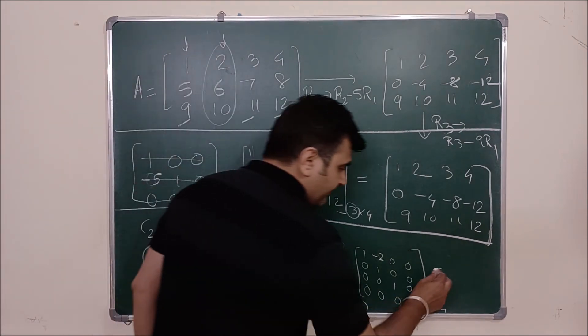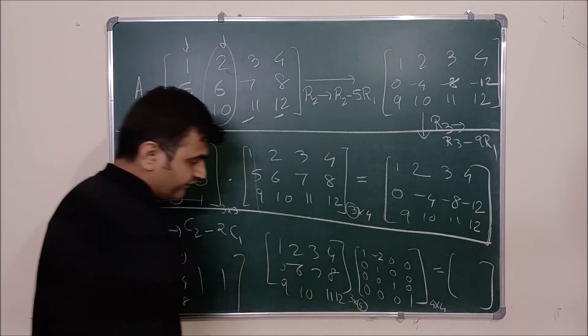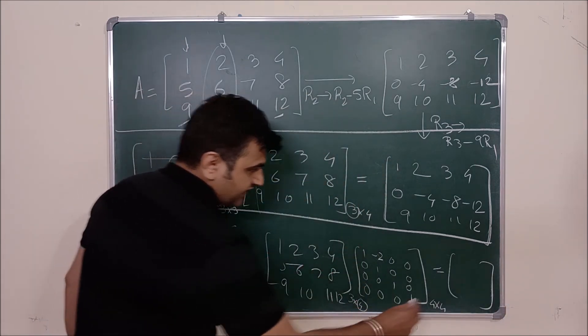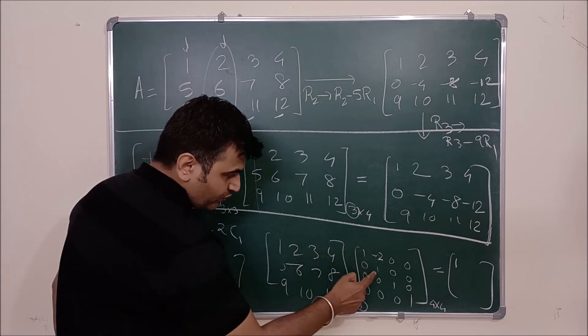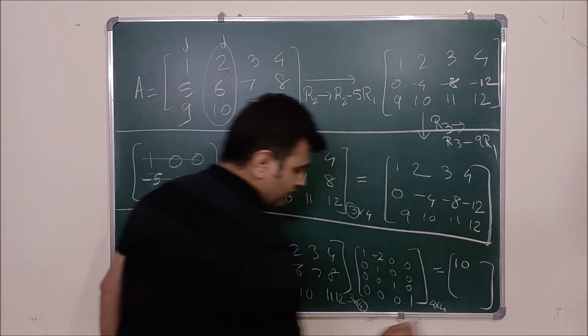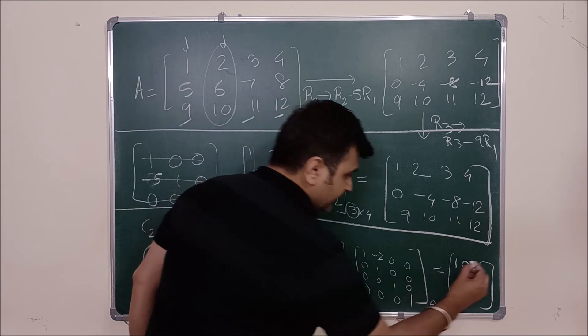This is 1. Now 1 into minus 2 plus 2 into 1, 0. So this is 0. Now again you get the same thing 3 and 4.